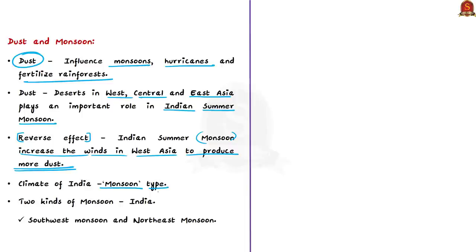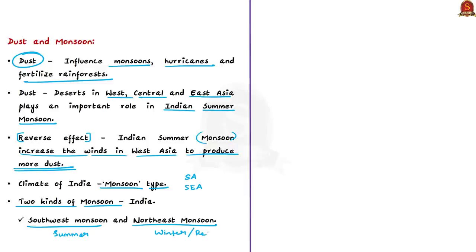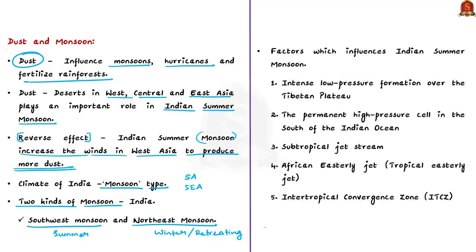The climate of India is described as monsoon type in Asia, mainly found in South Asia and Southeast Asia. India experiences two kinds of monsoon: the Southwest monsoon and the Northeast monsoon. The Southwest monsoon is also known as the Indian summer monsoon, occurring between June and September. The Northeast monsoon is also called the retreating or winter monsoon, occurring from October to November.